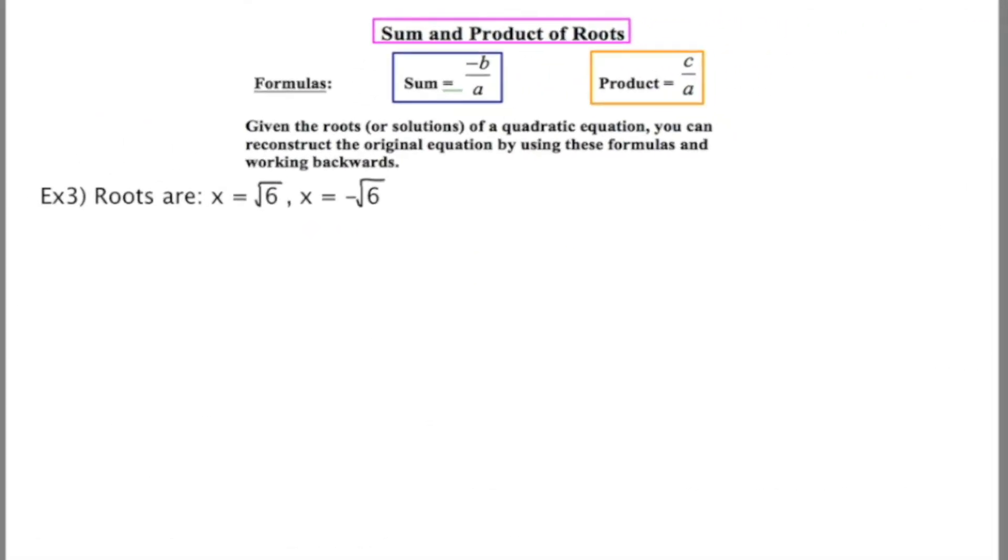In example 3, I give you two roots that include radicals, and this could be intimidating for some people, but the process is exactly the same. I'm going to start by finding the sum of these two roots, which means to add them together. What I'm adding are root 6 plus negative root 6. When you add something to its opposite, you get 0, which I'm going to express as 0 over 1, and set this equal to the formula negative b over a.